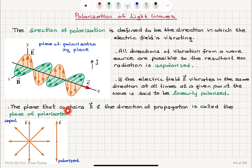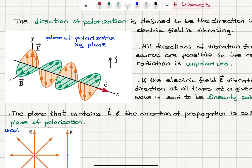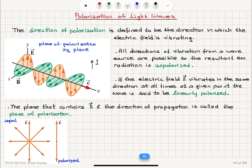The plane that contains the electric field and the direction of propagation is called the plane of polarization. The electric field is vibrating on the y-axis and the propagation direction is the positive x direction, so the plane defined by the y-axis and x-axis is the plane of polarization for this electromagnetic wave.